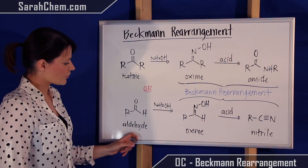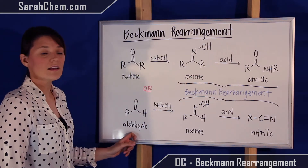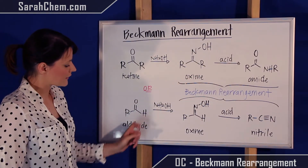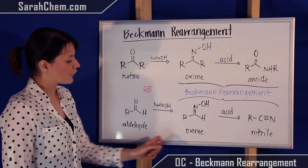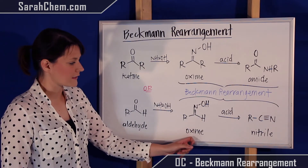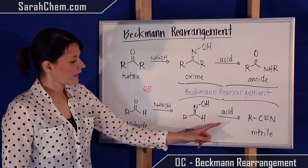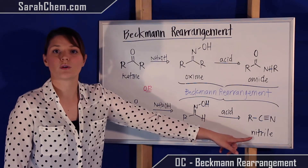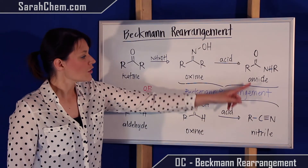Alternatively, we can start with an aldehyde, still using our hydroxylamine, and convert it over to an oxime. Once again we use an acid, and in this case we're going to convert over to a nitrile.